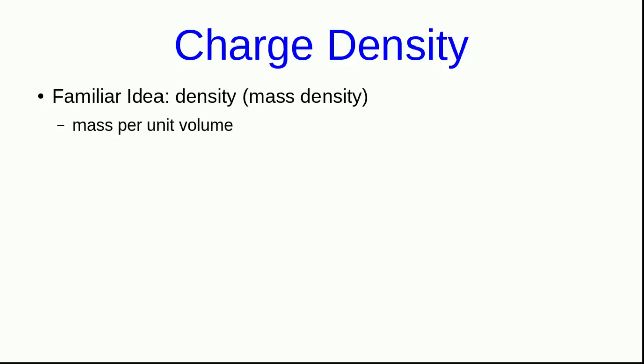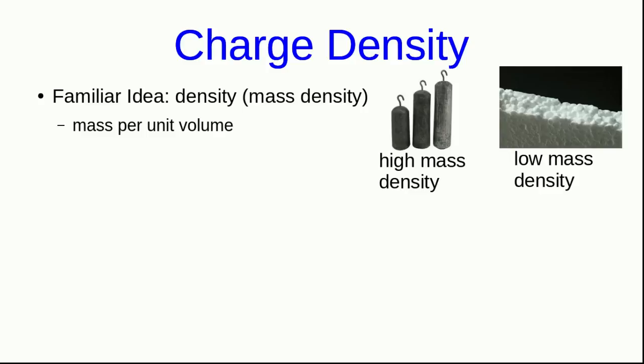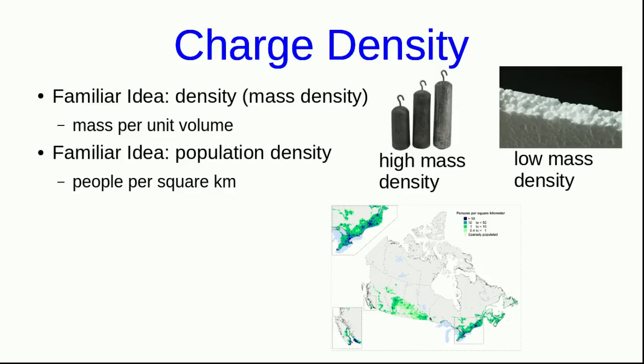An idea that's important when we're calculating the fields due to charge distributions is charge density. And this is related to familiar ideas that you already know. You've certainly come across the idea of density, or more properly what we would call mass density, which is a mass per unit volume. So for example, lead has a high mass density, whereas styrofoam has a very low mass density. Or you will have come across the idea of population density, which is people per square kilometer. Well, charge density is really the same idea.